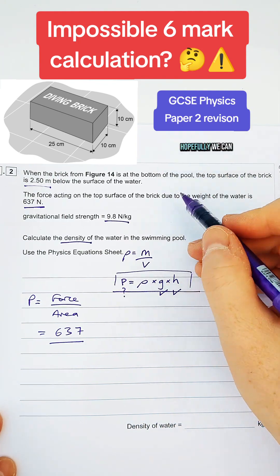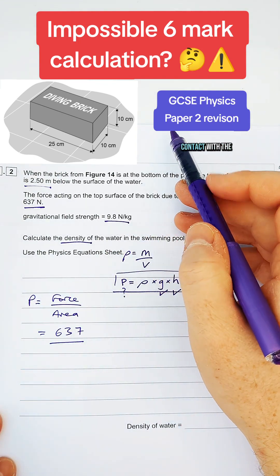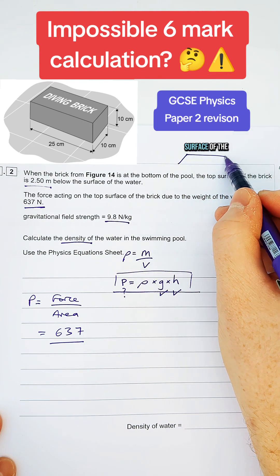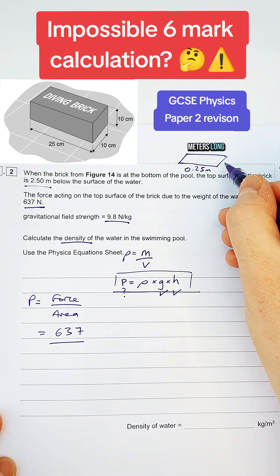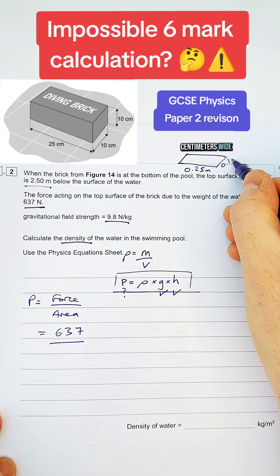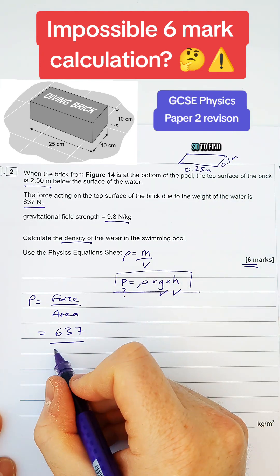So have a look at the brick up here. Hopefully, we can see that the surface that's in contact with the surface of the swimming pool is 25 centimetres long, so 0.25 metres long, and it's 10 centimetres wide, which is 0.1 metres wide.